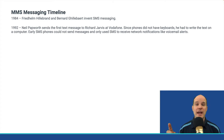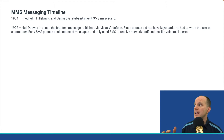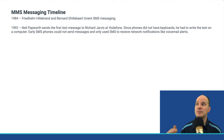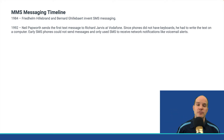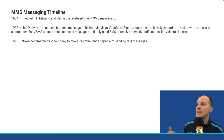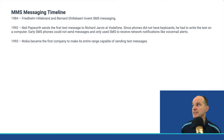Since phones back then didn't have keyboards, he had to write the text on a computer in order to receive it on the phone. Early SMS phones could not send messages and only used SMS to receive network notifications like voicemail alerts — think of this as a one-way page. In many ways, that's exactly what it was: a one-way text message with no way to respond to it directly. Then a little later, Nokia became the first company to make its entire range capable of sending text messages, and that's sort of when it became in vogue.